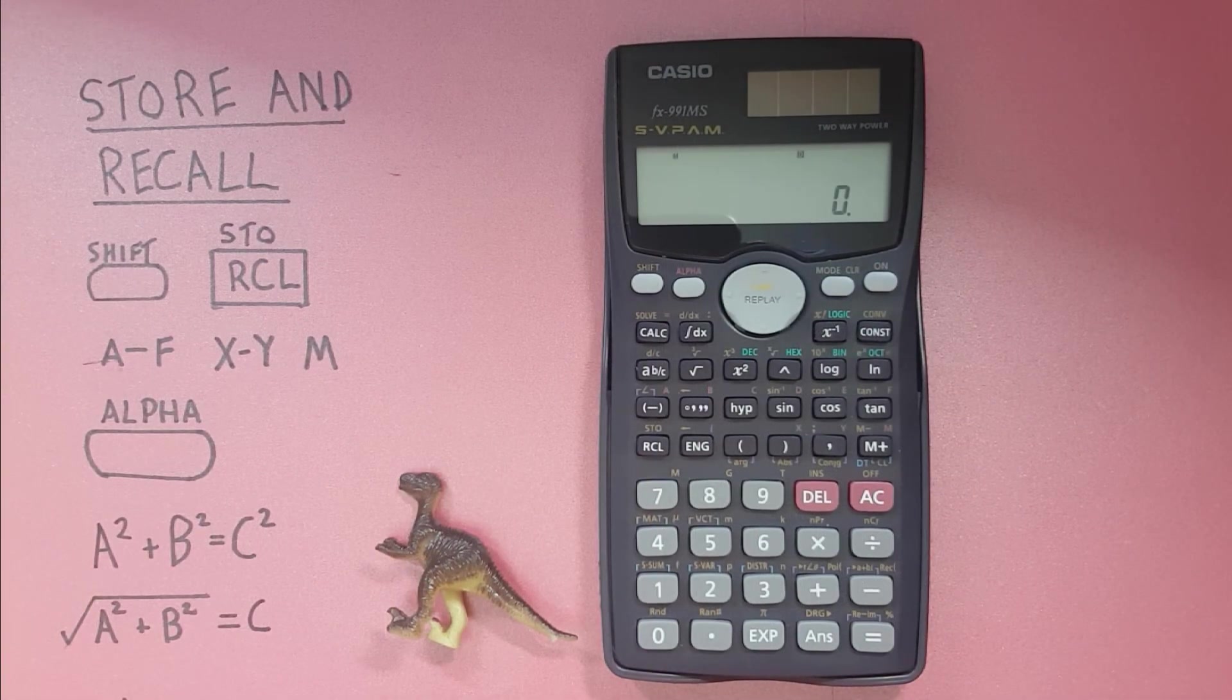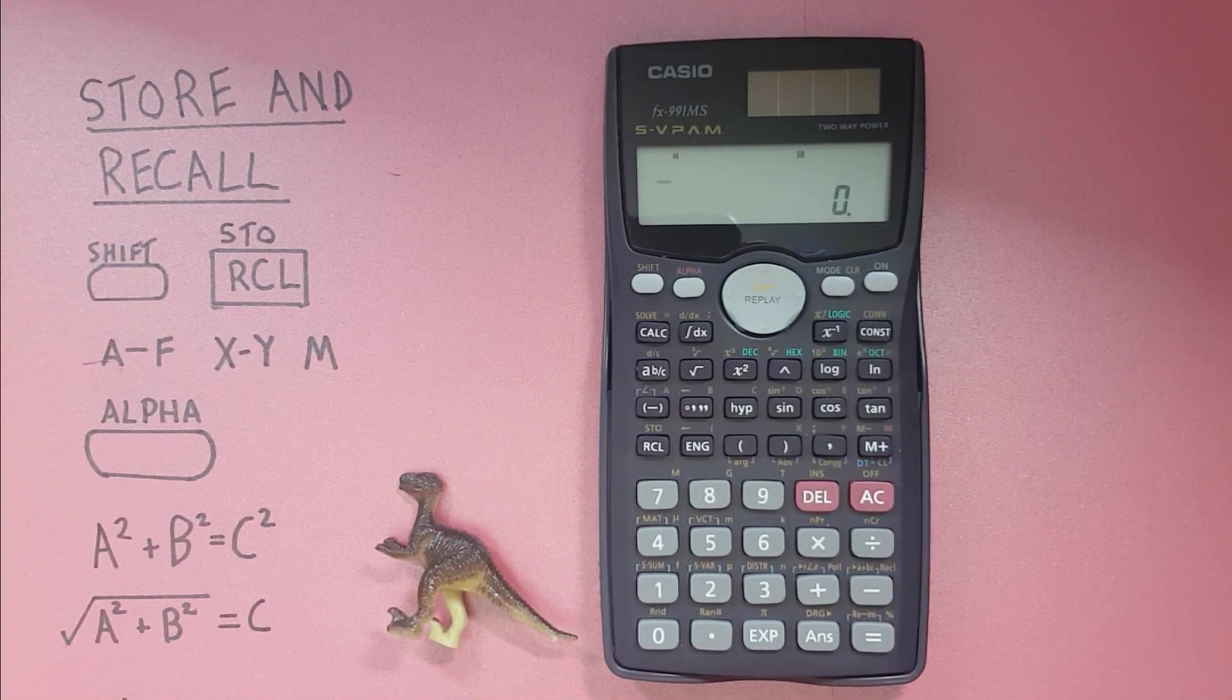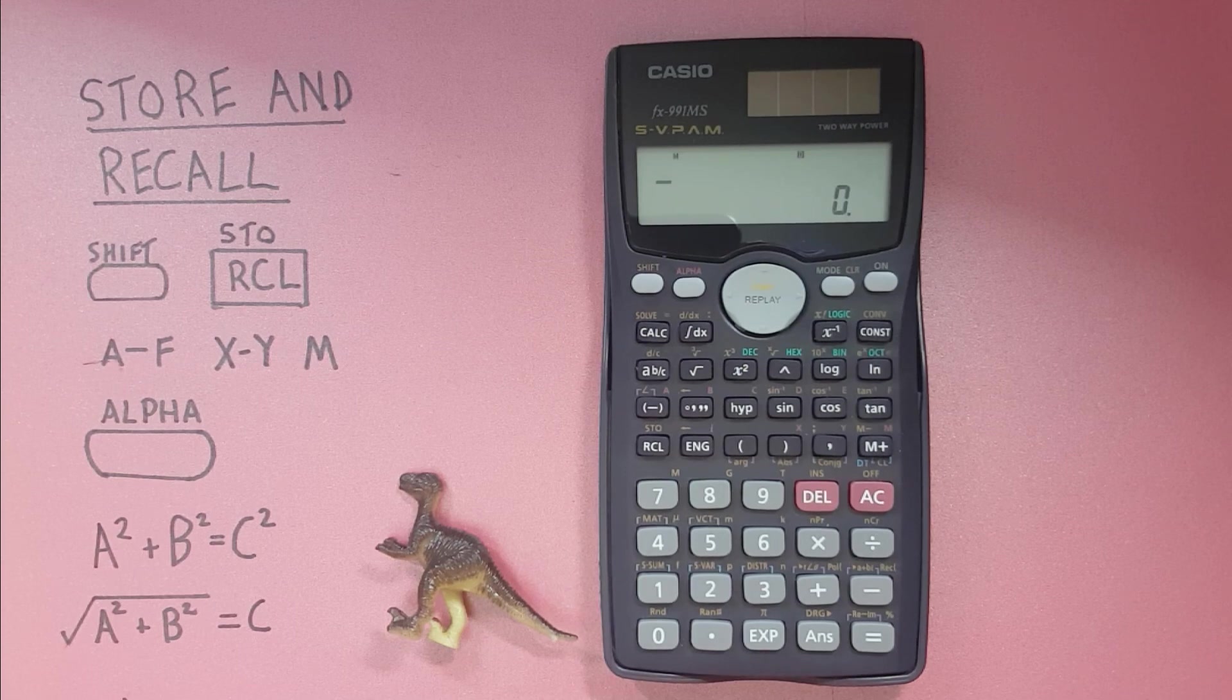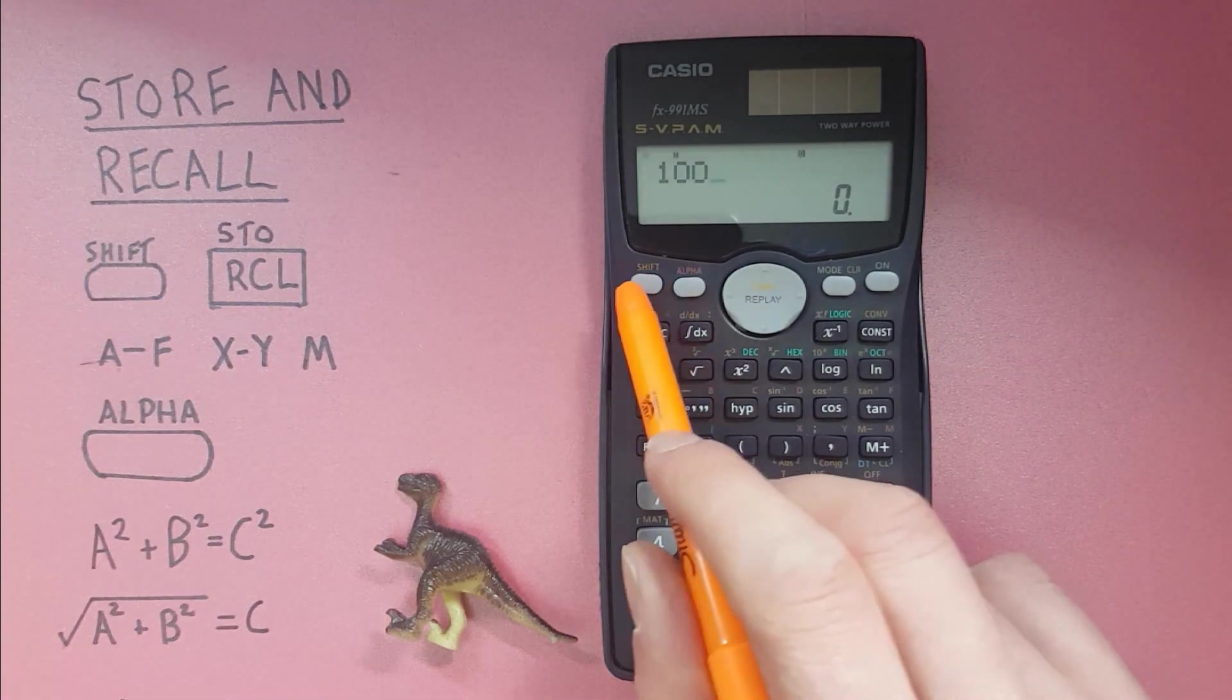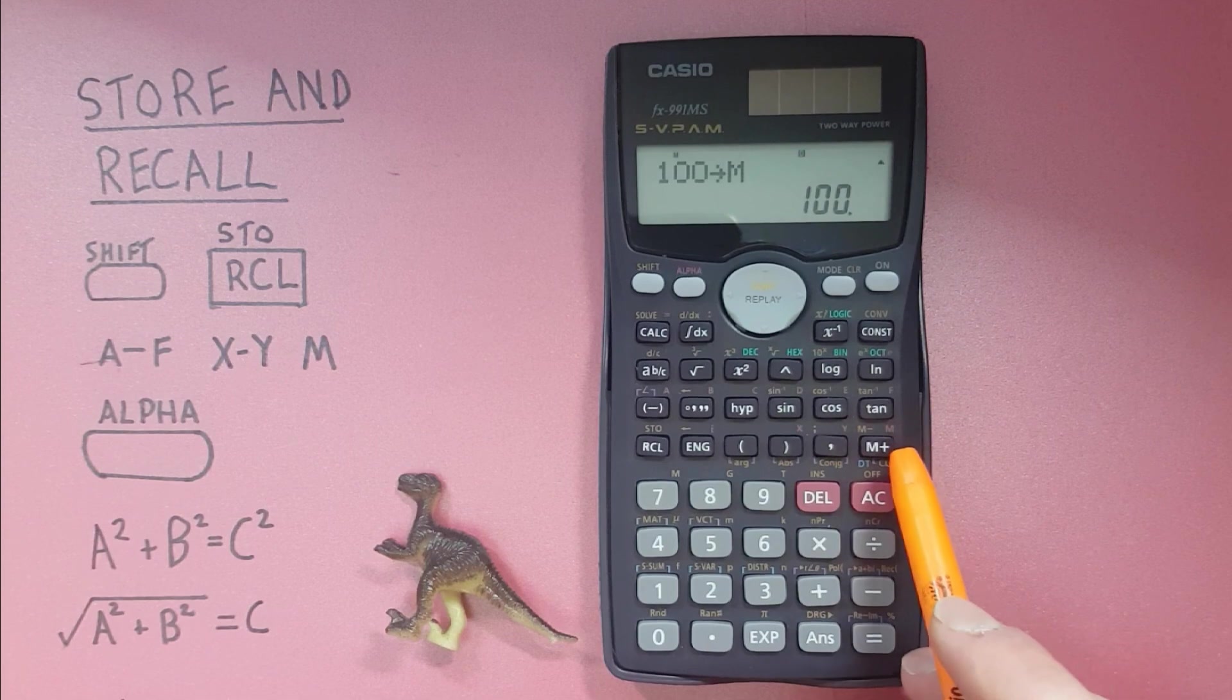This calculator also has an independent memory slot which is the M slot located here. What this means is we can add and subtract to that slot without overriding it. So if we say put 100 in there, shift store into M, there we go 100 into M.